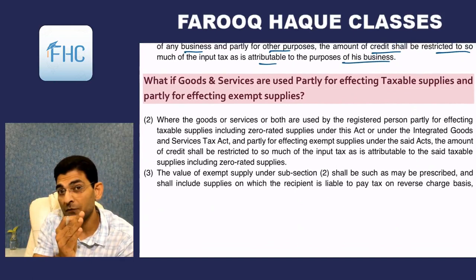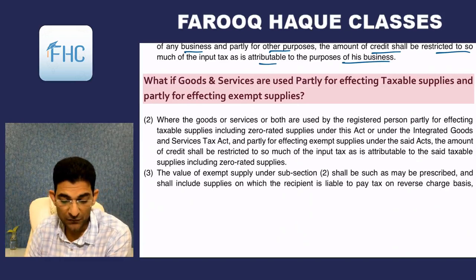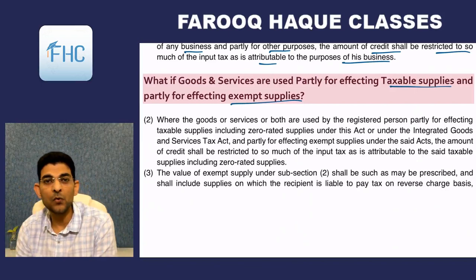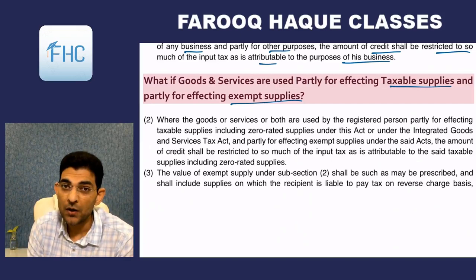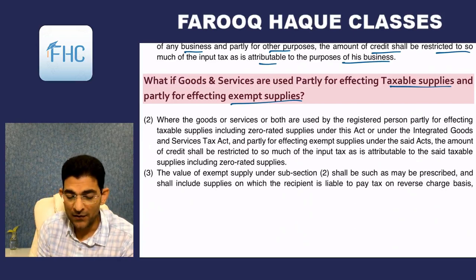In other words, the part of the inputs used for non-business purposes will not get credit. The second point covers goods and services used partly for taxable supplies and partly for exempt supplies. Inputs used for taxable supplies get credit; inputs used for non-taxable supplies do not get credit.